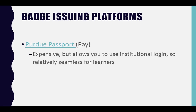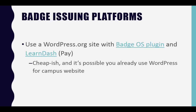There's a fancier option called Purdue Passport. It used to be in beta, but now it does cost money — anywhere from $800 a year to $20,000 a year for up to 30,000 users. It is very expensive, but it's relatively seamless because it allows you to use your institutional login, and it's all self-contained. If you had a small campus, it might work for you.